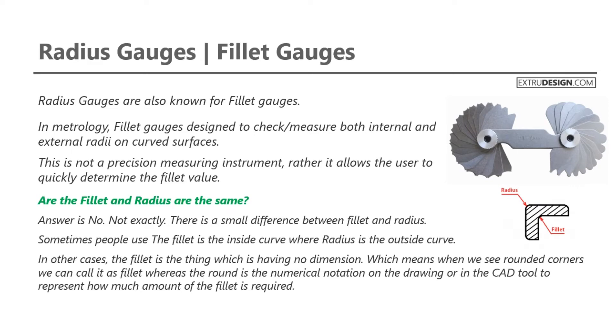In other cases, the fillet is the thing which has no dimension. Which means when we see rounded corners we can call it as fillet. Whereas the round is the numerical notation on the drawing or in the CAD tool to represent how much amount of the fillet is required.